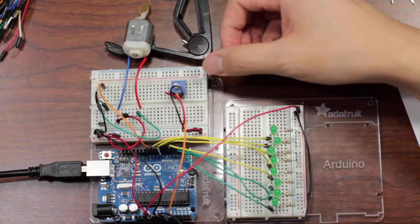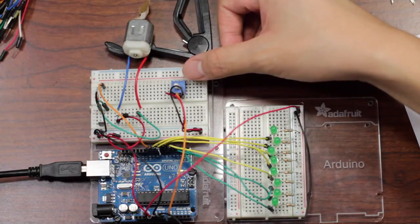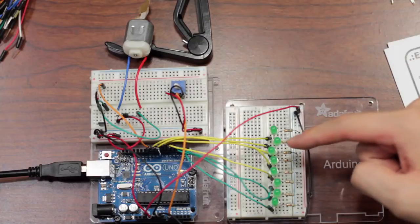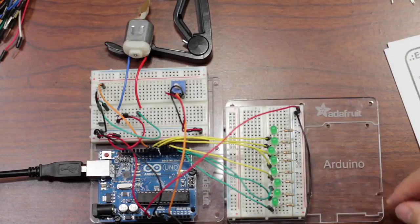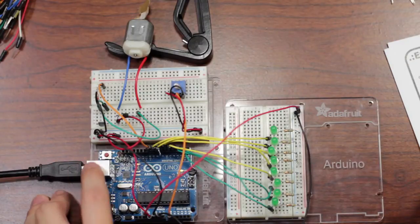This is a motor, this is a potentiometer, this is basically a knob, and you have eight LED lights, and all this is hooked up to the Arduino chip.